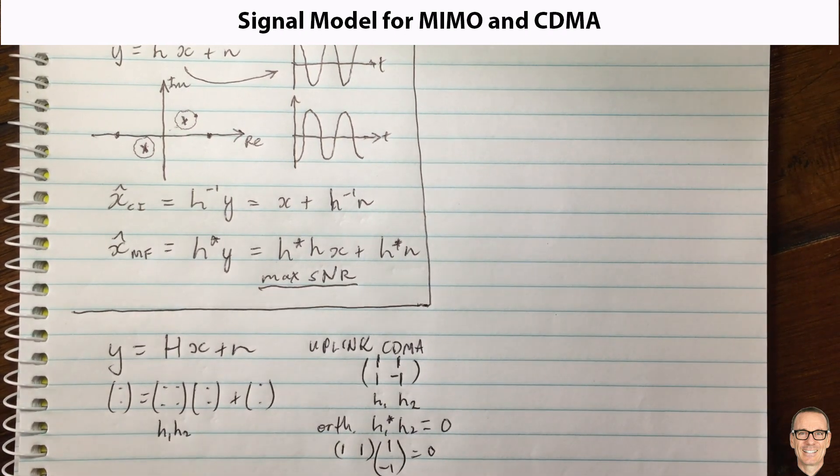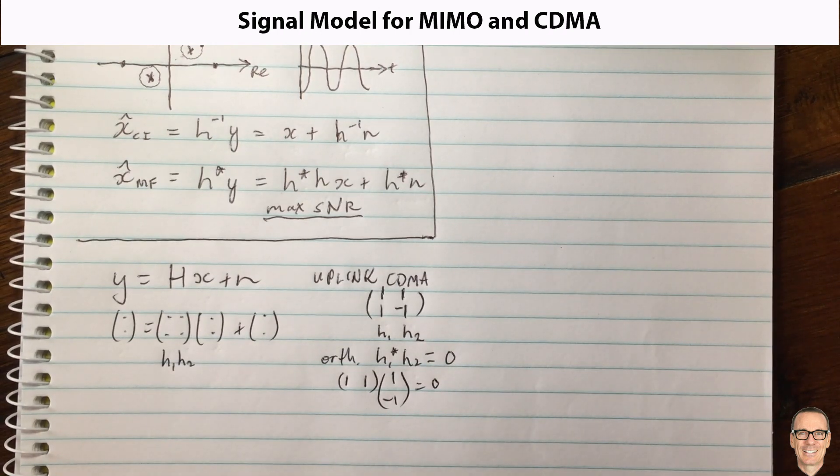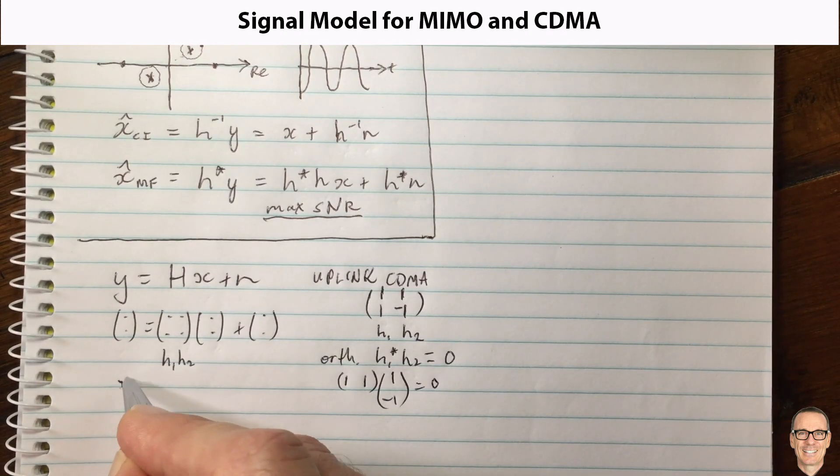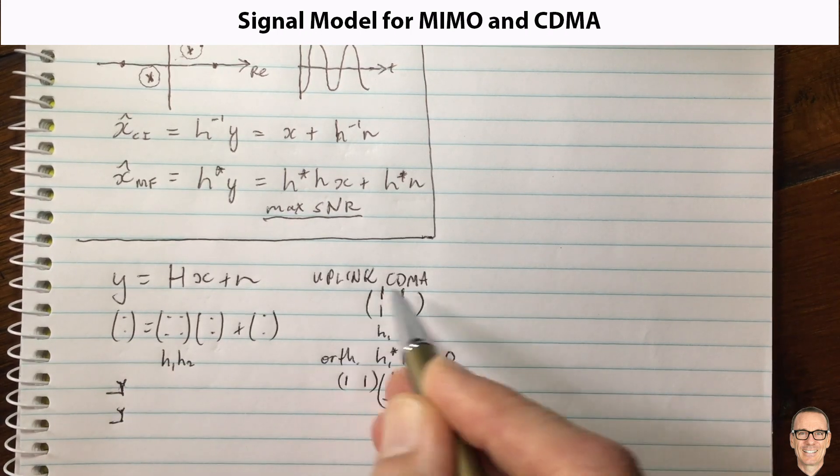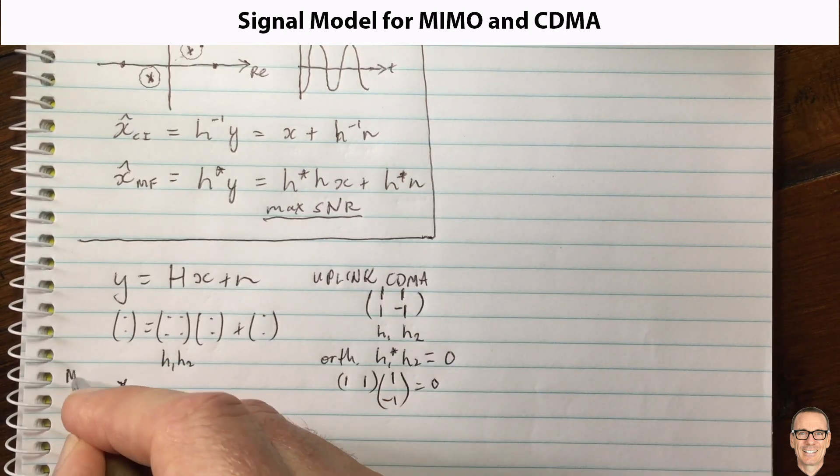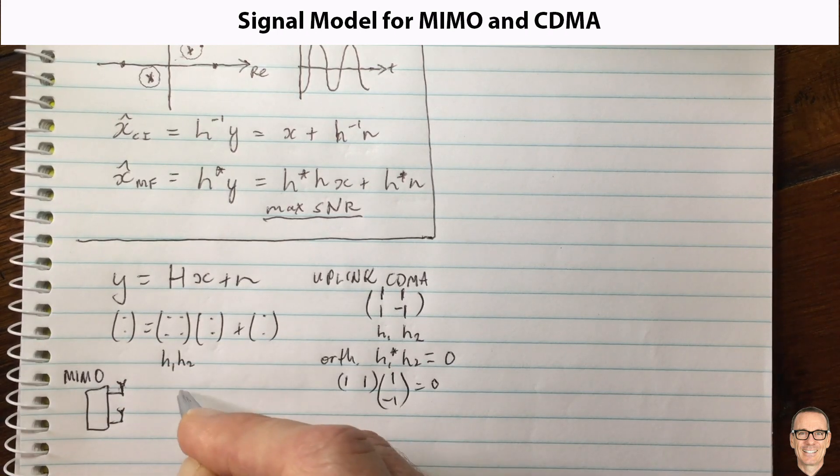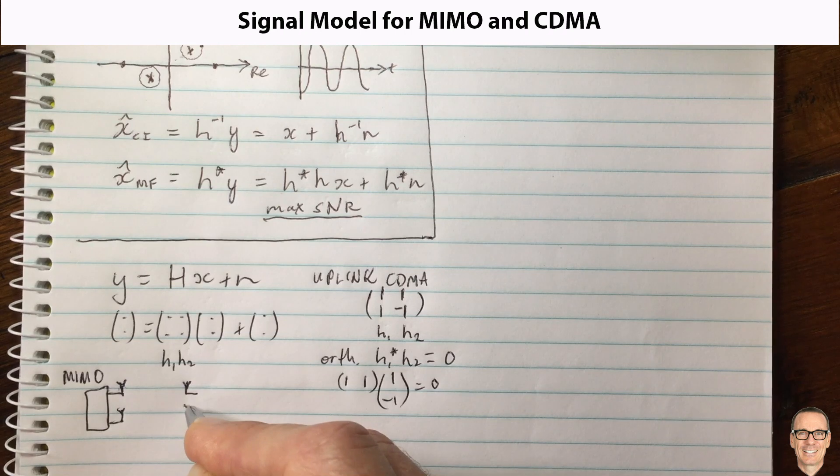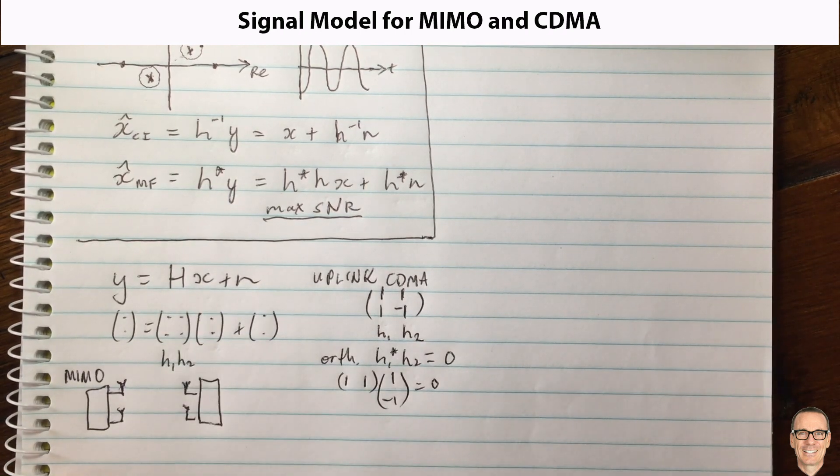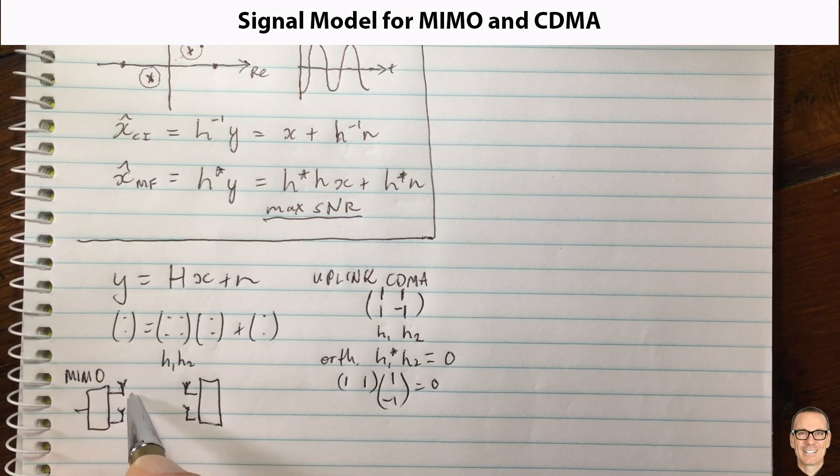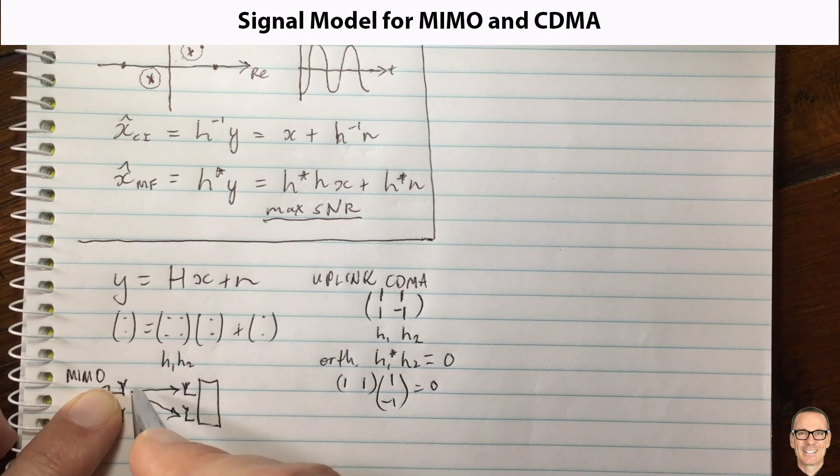The other example that this signal system model has is for a system where I'll just draw it in here, a system where you have MIMO. So that's this case, but the other case is MIMO where you've got multiple inputs multiple outputs, and you've got two data sequences that are being spatially multiplexed. So if this is the transmitter here...